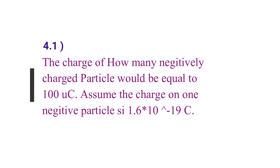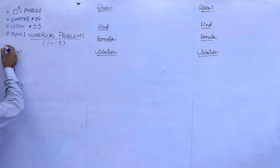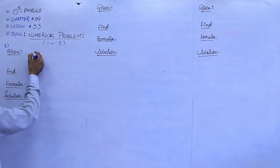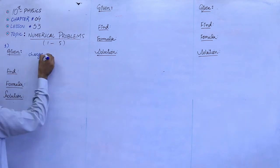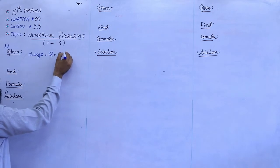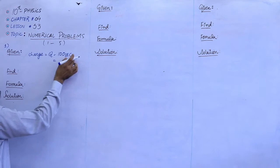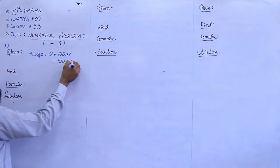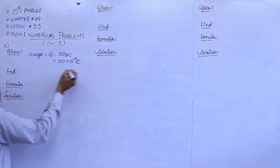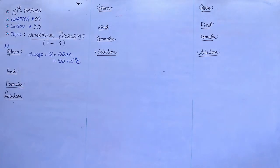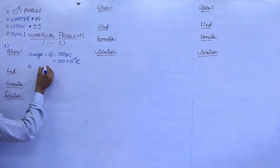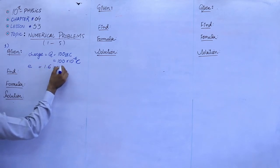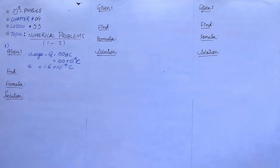Before solving, let us get the given data. In the first numerical, we have two things available. First, the total charge Q is equal to 100 microcoulomb, which in standard form converts to 100 into 10 raised to power minus 6 coulomb. The second thing we have is the charge on one electron, which is 1.6 into 10 raised to power minus 19 coulomb. All values are now in standard form. We have to find out the number of particles.